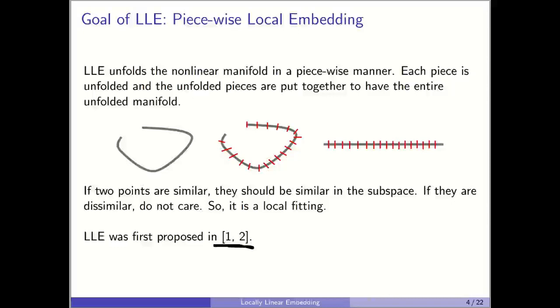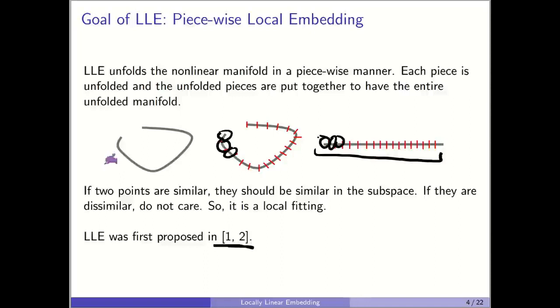The idea of LLE is local embedding, or local piecewise embedding — similar to piecewise spline regression. Assume we have a nonlinear manifold; we divide it into small linear pieces, then unfold the manifold piecewise. We put each piece close to the next, unfolding them one by one, so this nonlinear 2D manifold is unfolded to 1D.